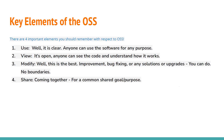The key elements of OSS — there are four important elements. First is Use: anybody can use the software for any purpose. Second is View: it is open, anyone can see the code and understand the underlying technique — how it works. Third is Modify: this is the best feature of OSS — anybody can go ahead and modify it, improve it, fix bugs, and provide upgrades. Fourth is Share: you come together, share it, and share the knowledge for a common goal and purpose.